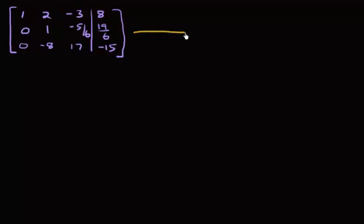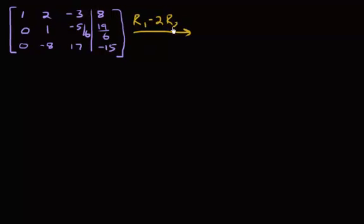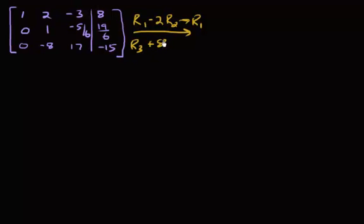So now we'll change. Our pivot is right here, and we want to change row 1 and row 3. So it's going to be row 1 — if this is a 2 and I need to turn this into a 0, then this needs to be a negative 2. So you'd write negative 2 times row 2, store back into row 1. And then this is a negative 8, so this needs to be a positive 8. So it's going to be row 3 plus 8 times row 2, store that back into row 3.